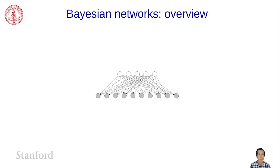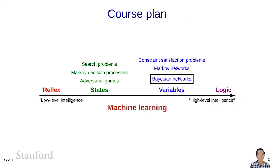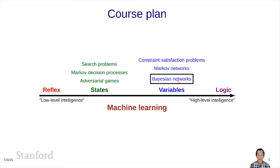In this module, I'm going to talk about Bayesian networks, a new modeling paradigm. We have talked about two types of variable-based models: the first was constraint satisfaction problems, where the objective is to find the maximum weight assignment given a factor graph. Then we talked about Markov networks, where we used factor graphs to define a joint probability distribution over assignments and were computing marginal probabilities. Now I'm going to talk about Bayesian networks, where we still define a distribution over a set of random variables using a factor graph, but the factors are going to have special meaning.